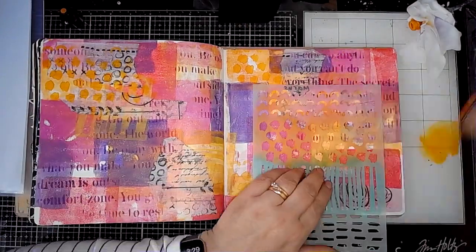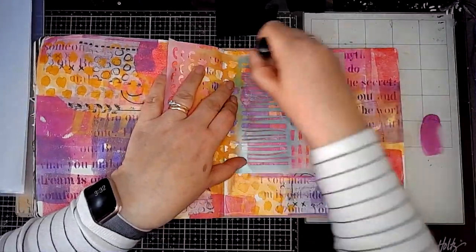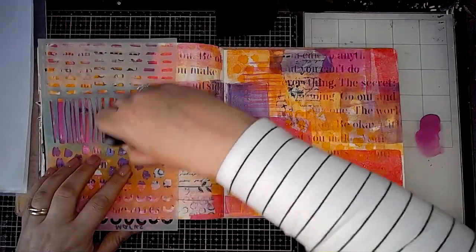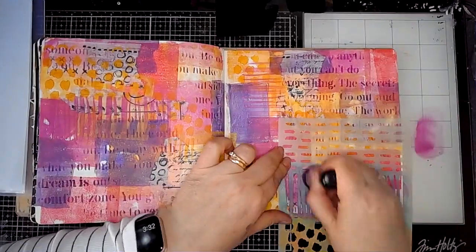There's new stencils, this is called Marks and I'm just adding some more onto the page. I'm just overlapping the stenciling over the top of the gel printing, it's creating quite an interesting background.